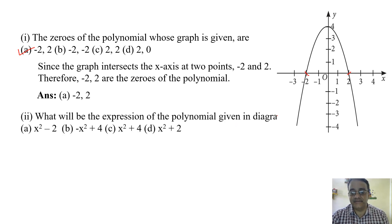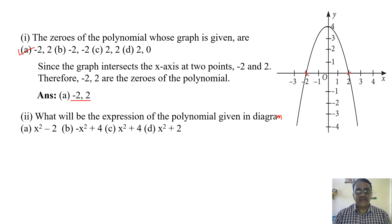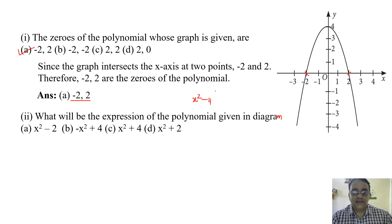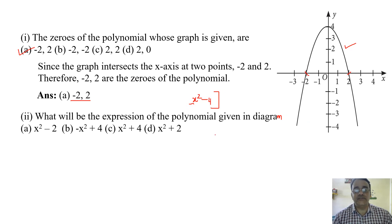What is the expression of the polynomial given in the diagram? The two zeros are minus 2 and 2. Sum equals zero, product equals minus 4. Using our formula we would get x squared minus 4, but this is wrong because this is a downward parabola.